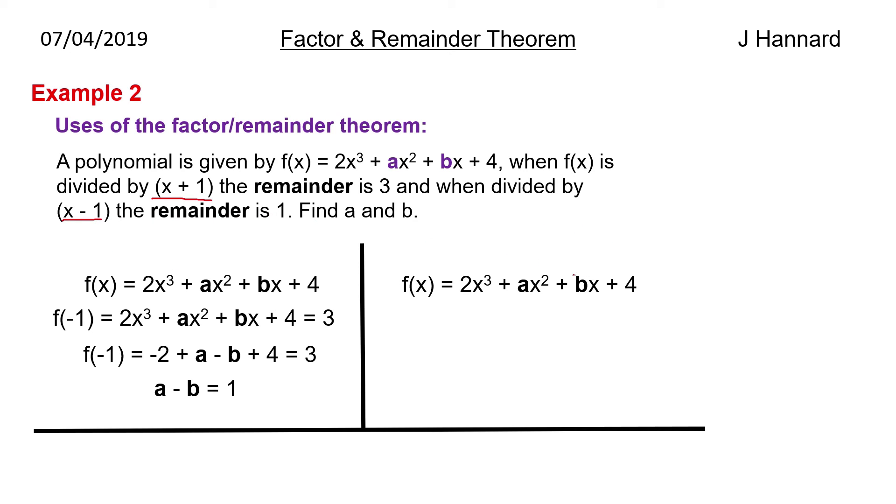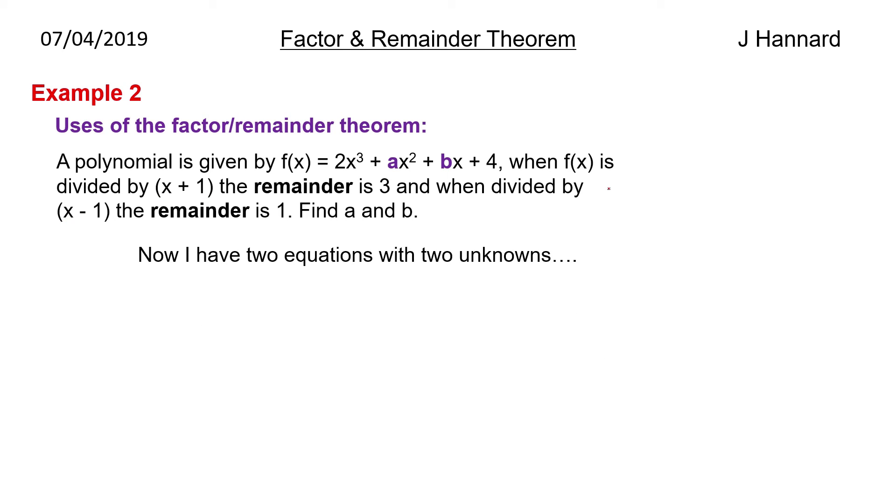Let's go on to the other equation then. So now we know when it's divided by x minus 1, the remainder is 1. So here we go. If we let x equal 1, then we can set the other side equal to 1. So f of 1 is equal to 2x cubed plus ax squared plus bx plus 4 equals 1. Everywhere you see an x, replace it with a 1. And you get that. Rearrange and you get a plus b equals minus 5. So I've got two unknowns and two equations. I'm thinking simultaneous equations.